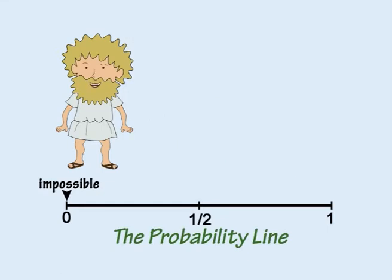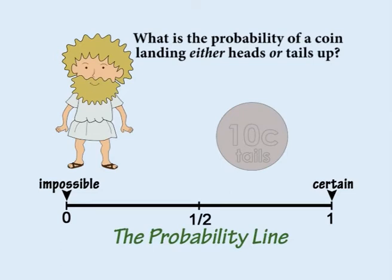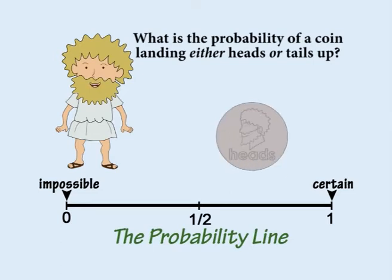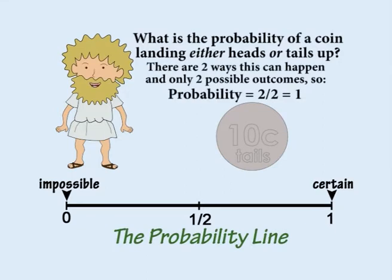On the probability line, one means certainty. For example, what is the probability of a coin landing either heads up or tails up? We can be certain the coin will land either heads or tails up, because these are the only possible outcomes. So the probability is one.